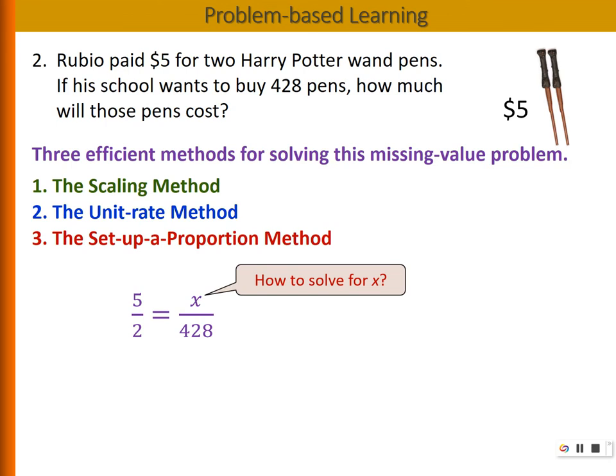To solve for x, we essentially need to get x by itself. One technique is to get rid of the denominator 428. How can we get rid of the denominator 428? We can multiply both sides of the equation by 428.